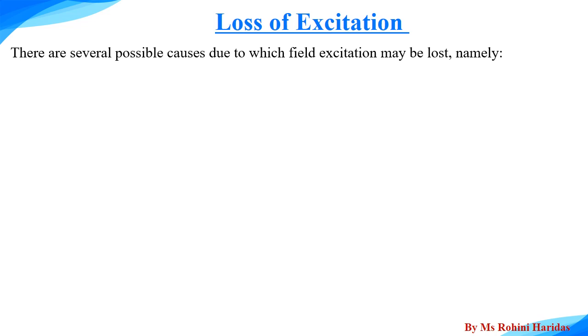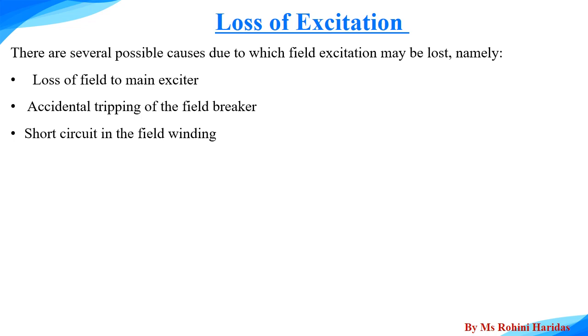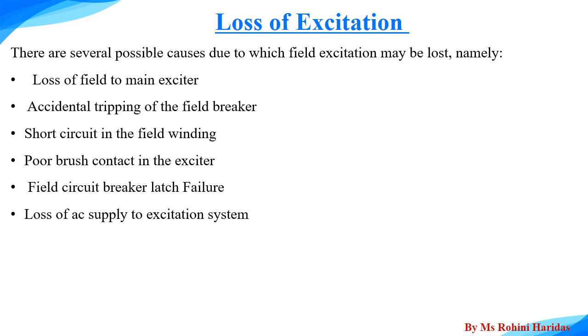The next abnormal condition is the loss of excitation. There are several possible causes due to which the field excitation may be lost. It can be loss of field to main exciter, accidental tripping of the field breaker, short circuit in the field winding, poor brush contact in the exciter, field circuit breaker latch failure, loss of AC supply to the excitation system.